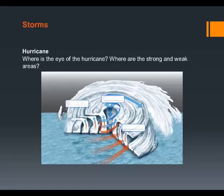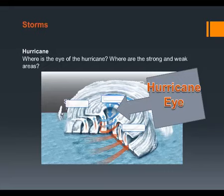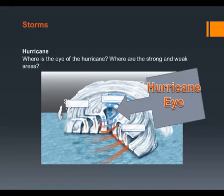The eye's extreme low pressure usually has sinking air, which causes very weak winds at the center. Out towards the outer rims of the hurricane, we have strong winds. All the air is sinking down on top of whatever is underneath the eye, while the outer bands maintain strong, spiraling winds.